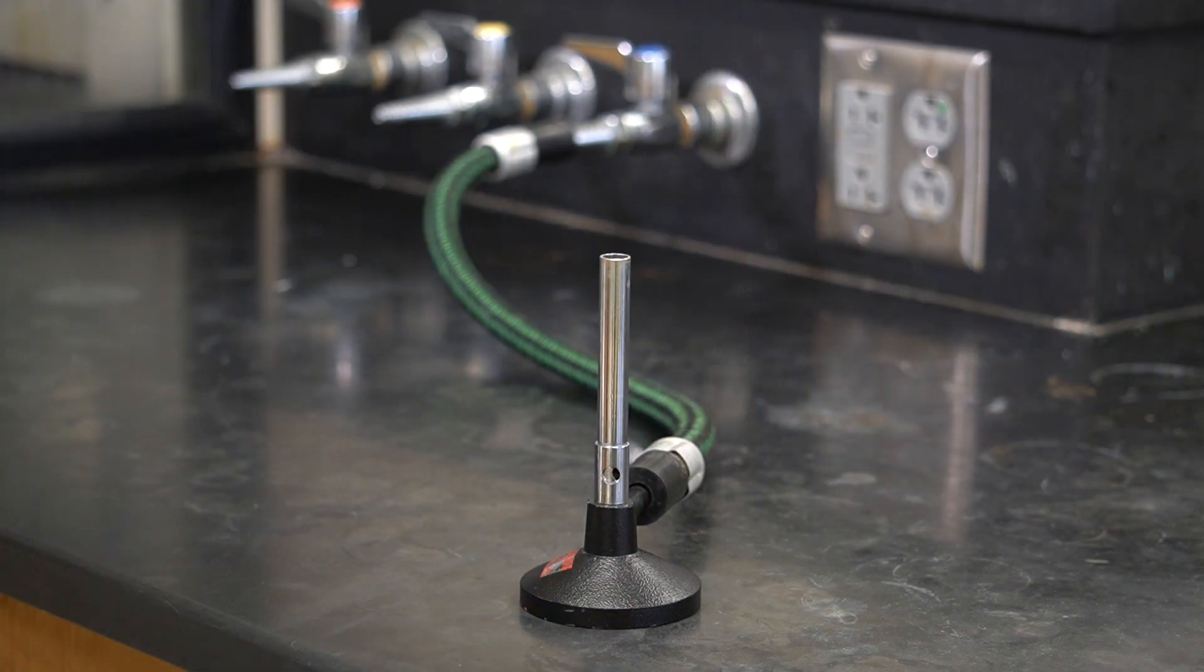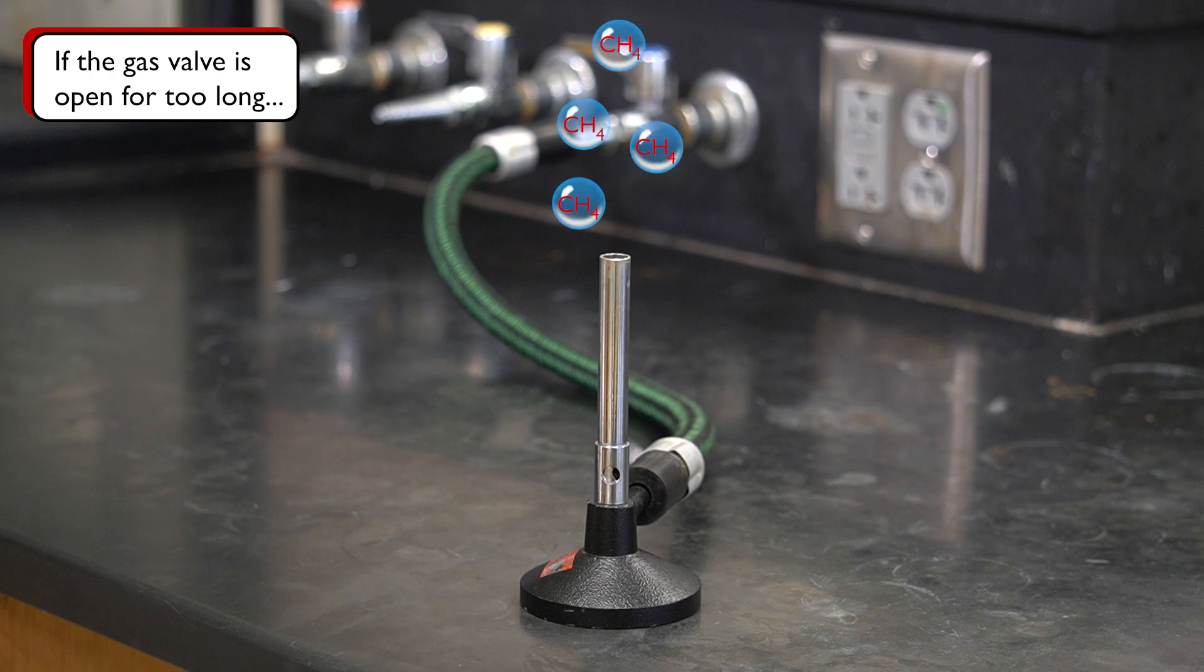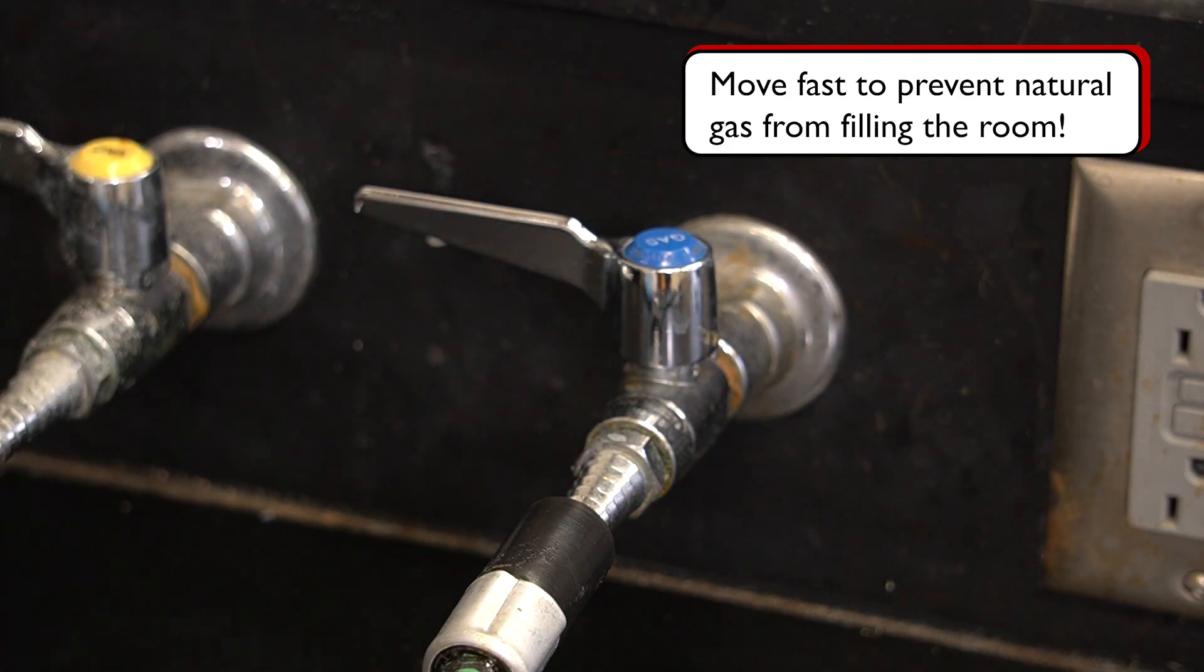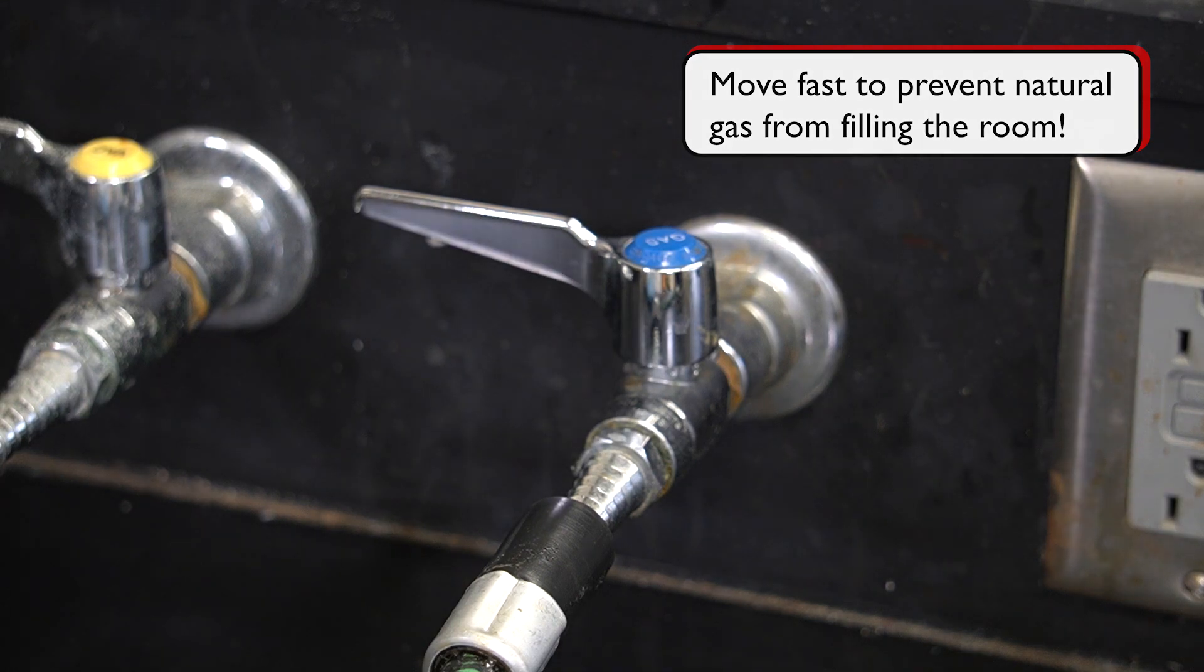For the next few steps, it is important to move quickly. Leaving the gas valve open for too long will fill the area of the lab with flammable gas, which is a safety hazard. If the gas has been on for too long, turn off the gas and wait until the gas has had a chance to diffuse into the room, at least 10 seconds.